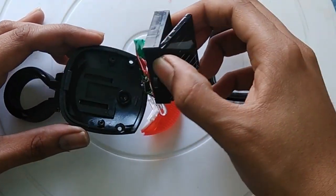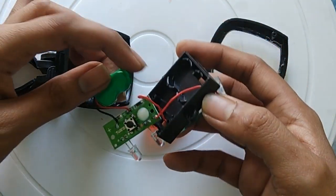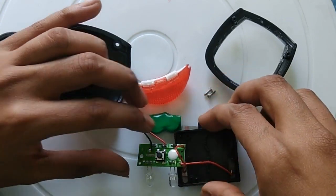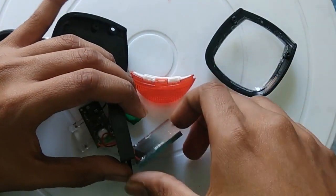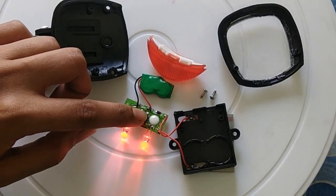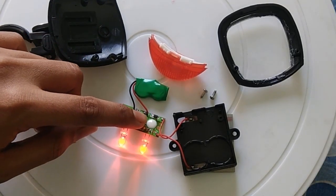So here after opening you can see the solar cell. This green part is the rechargeable battery. So the bicycle tail light has three modes: one is slow blinking, fast blinking, steady or continuous, and fourth one is off.